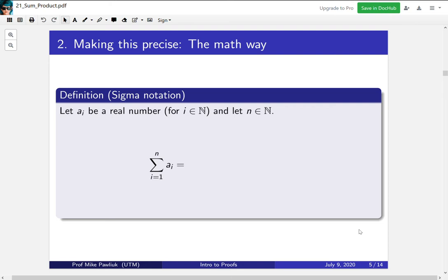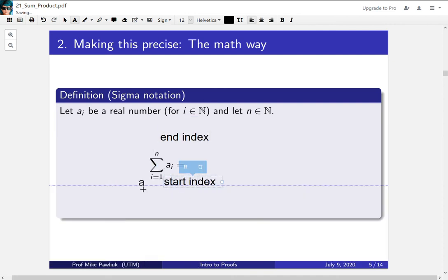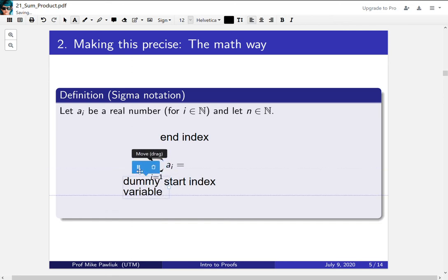So let AI be a real number where i is just some index, and n is going to be our stopping index. So this notation is read the sum from i equals 1 to n of AI, and here the n is our end index, 1 is our start index, i is our dummy variable, and our AI is our general term.